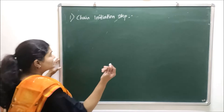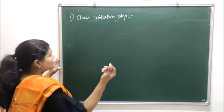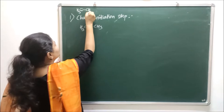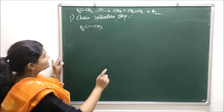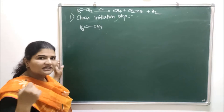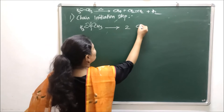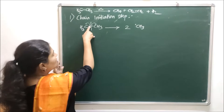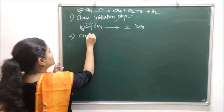The first step is chain initiation. In chain initiation, the free radical is generated from the substrate. Here our substrate is CH₃CH₃ — ethane. In the first step, the bond between carbon and carbon undergoes homolytic fission and you get two methyl free radicals. By breaking this bond, one electron goes to each carbon, yielding two methyl free radicals (·CH₃).